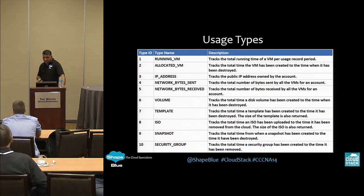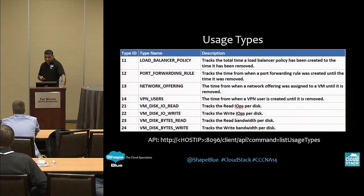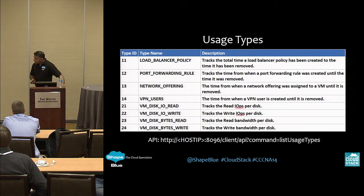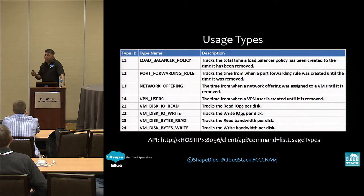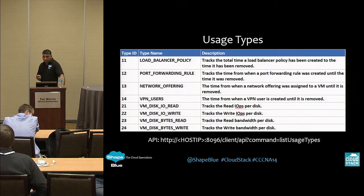The IP address tracks how long the IP address was assigned. Network bytes sent and received are not created through CloudStack events — that's handled by the other products mentioned earlier. There are additional usage types based on networking: load balancers, port forwarding, and network offering creation. The last four usage types are specific to when a storage plug-in has been deployed, giving you the ability to track IOPS and bandwidth used by a VM. However, you can only get that information if a storage plug-in is enabled and your hypervisor supports disk IO polling. Today, KVM and XenServer support this; VMware and OVM support is on the way.